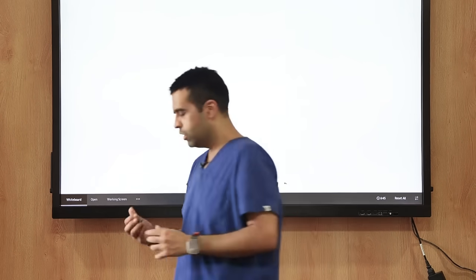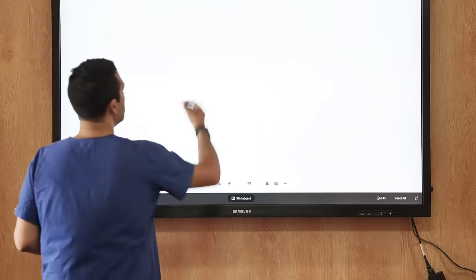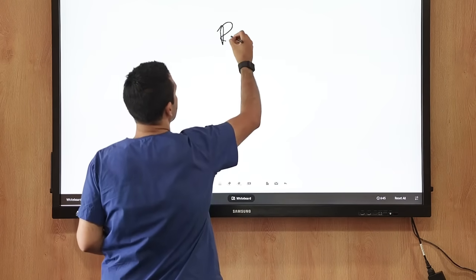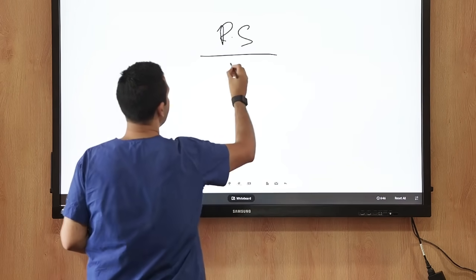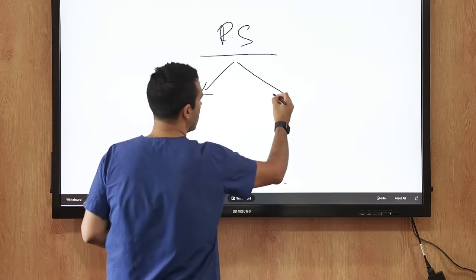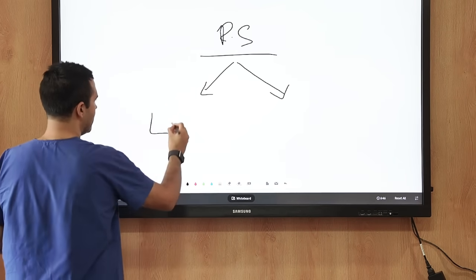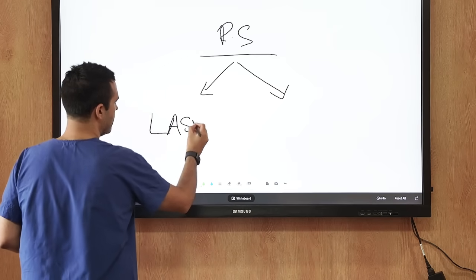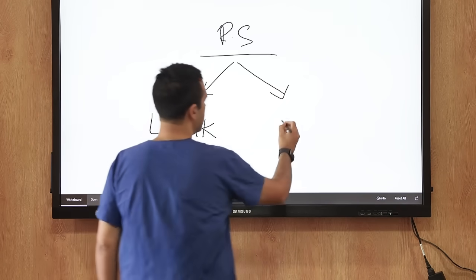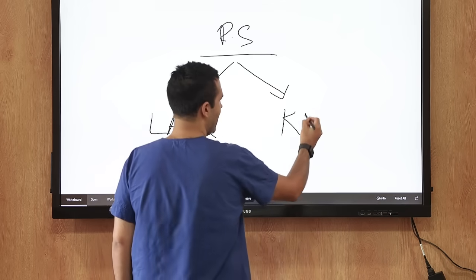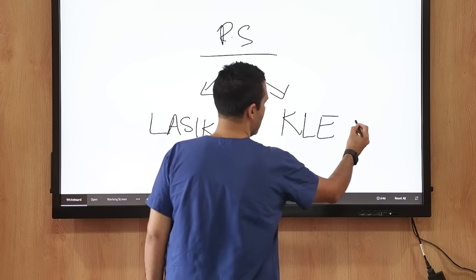I'll give you a brief overview. Refractive surgery is basically of two types: one is LASIK, as we all know, laser in-situ keratomileusis, and the other is popularly known as KLEX. KLEX stands for keratolenticule extraction.